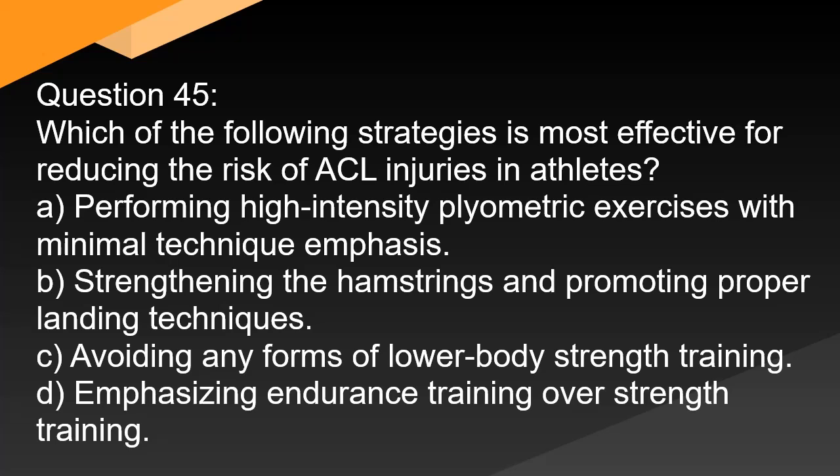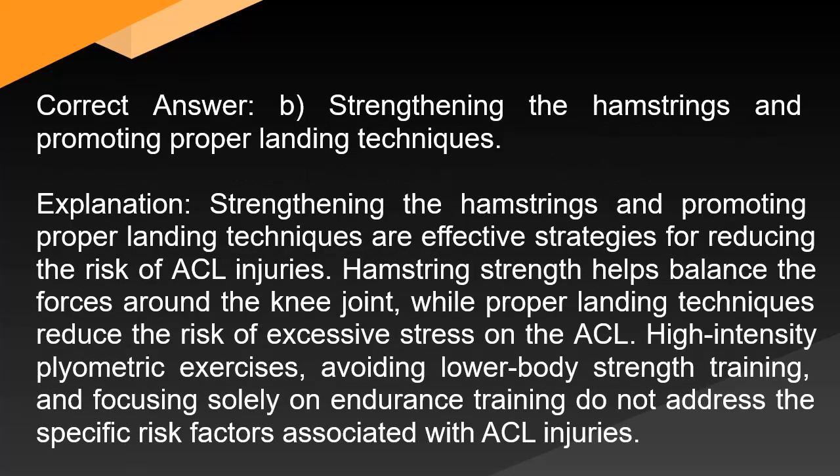Question 45: Which of the following strategies is most effective for reducing the risk of ACL injuries in athletes? A. Performing high-intensity plyometric exercises with minimal technique emphasis. B. Strengthening the hamstrings and promoting proper landing techniques. C. Avoiding any forms of lower body strength training. D. Emphasizing endurance training over strength training. Correct answer: B. Strengthening the hamstrings and promoting proper landing techniques are effective strategies for reducing the risk of ACL injuries. Hamstring strength helps balance the forces around the knee joint, while proper landing techniques reduce the risk of excessive stress on the ACL. High-intensity plyometric exercises without technique focus, avoiding lower body strength training, and focusing solely on endurance training do not address the specific risk factors associated with ACL injuries.